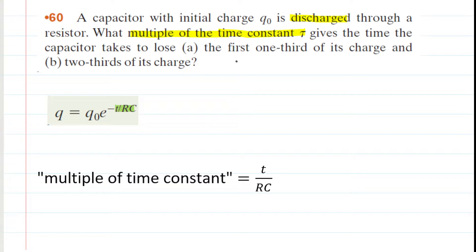In part a, we need to look at the wording very carefully. It says losing one-third of its charge. So if a capacitor is losing one-third of its charge, then it still has two-thirds of its charge. So for q in the equation, we're plugging in two-thirds of the initial charge. That's going to equal q-naught times e to the power of negative t over RC.